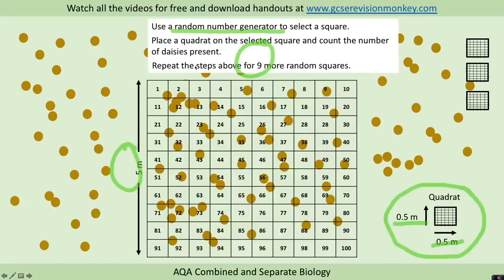We repeat the steps for perhaps nine more random squares, so we might do 10 in total. Let's say our random number generator picked us out the number nine. We take our quadrat, place that on square nine, and count the number of daisies present.